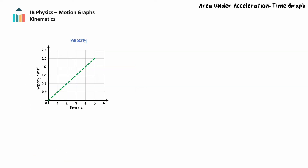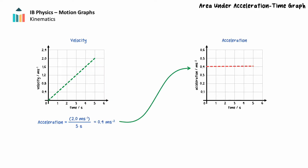Just like we can develop velocity-time graphs from position-time graphs, we can develop acceleration-time graphs from velocity-time graphs. Recall that the gradient of the velocity-time graph is the acceleration of the object. For uniform acceleration, the acceleration-time graph will be linear with a gradient of zero. The position of the graph on the vertical axis is equal to the gradient of the velocity-time graph.